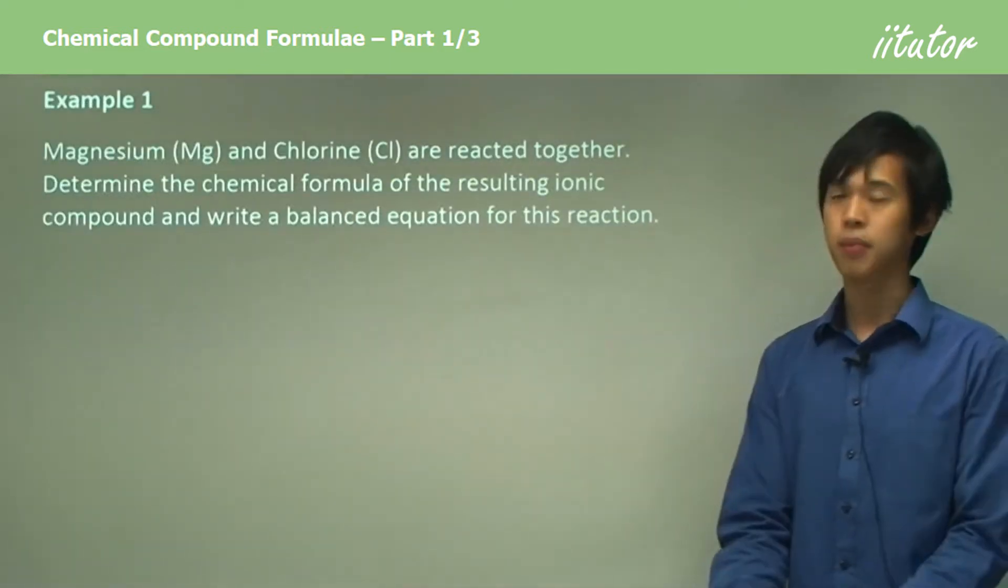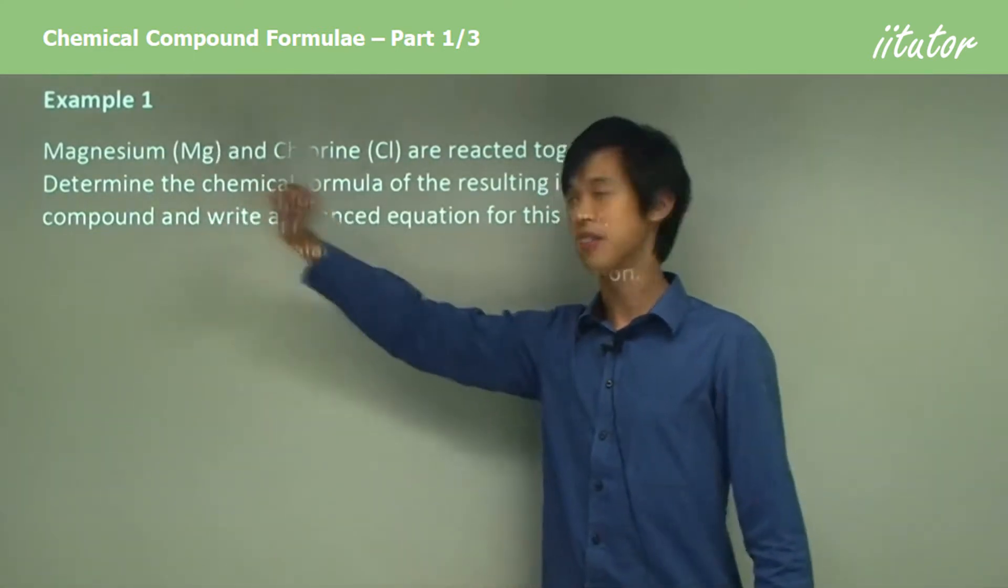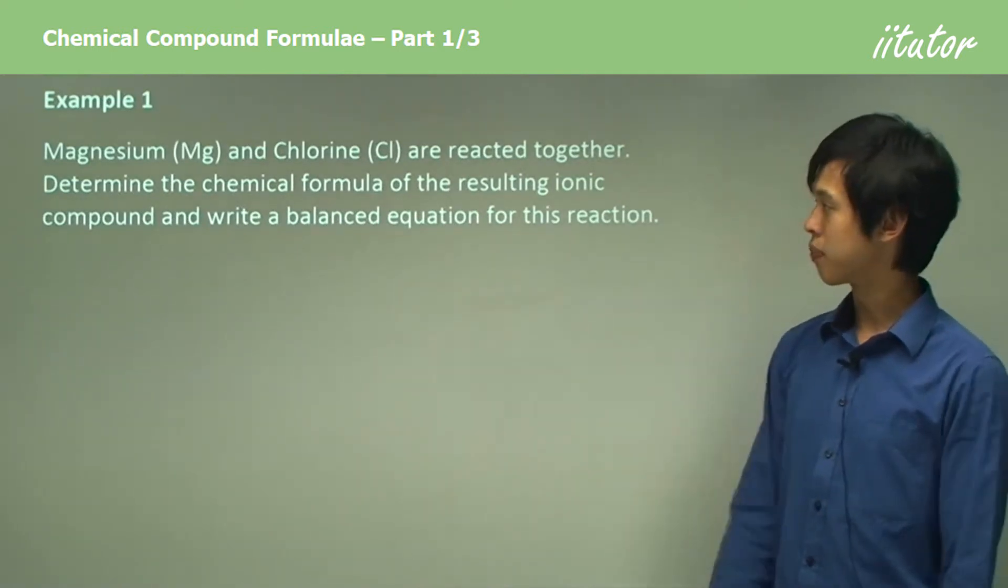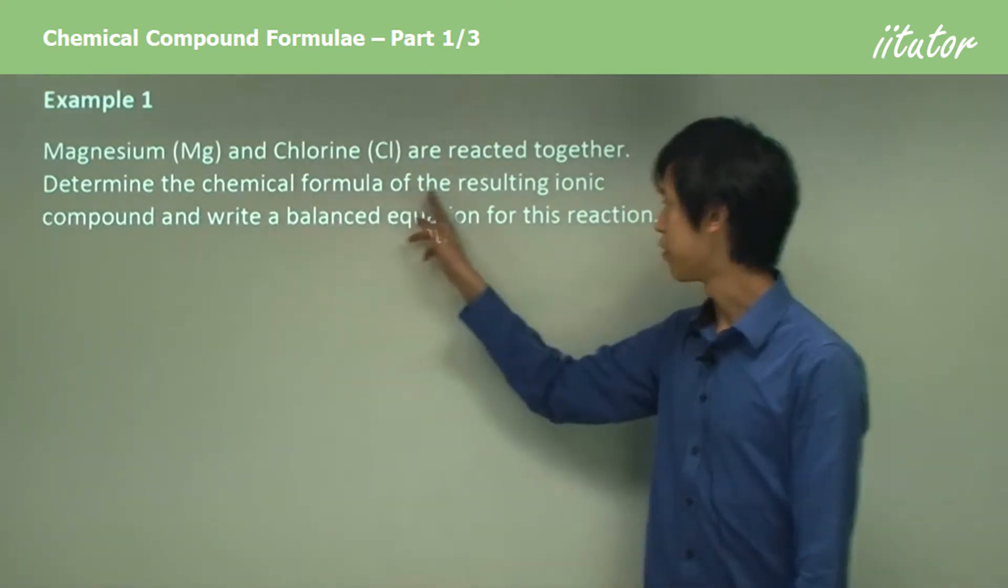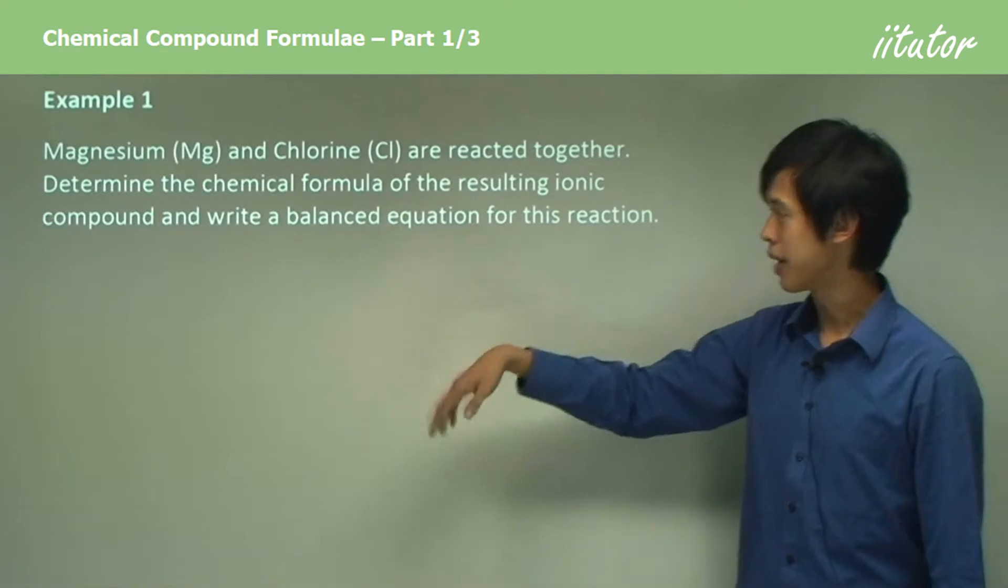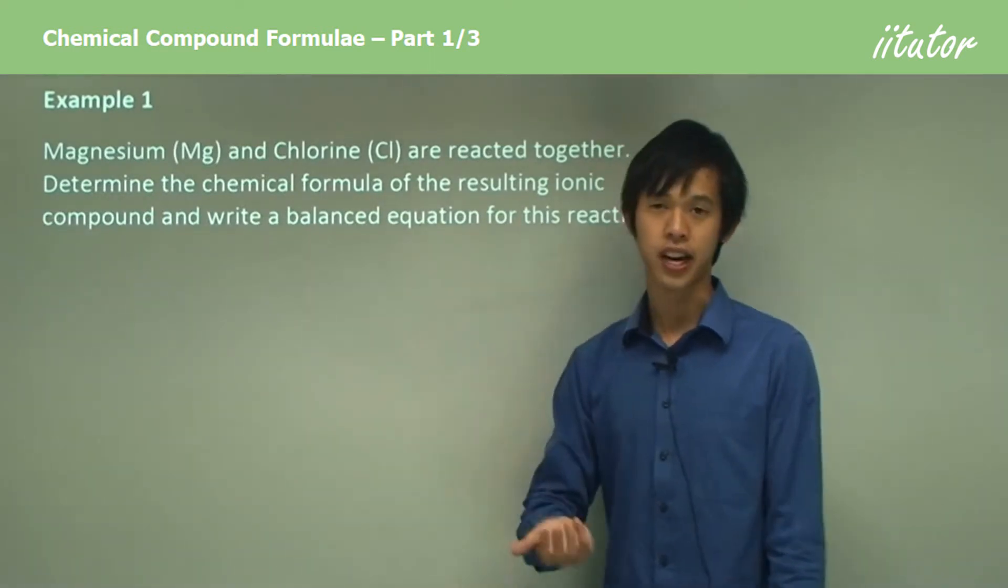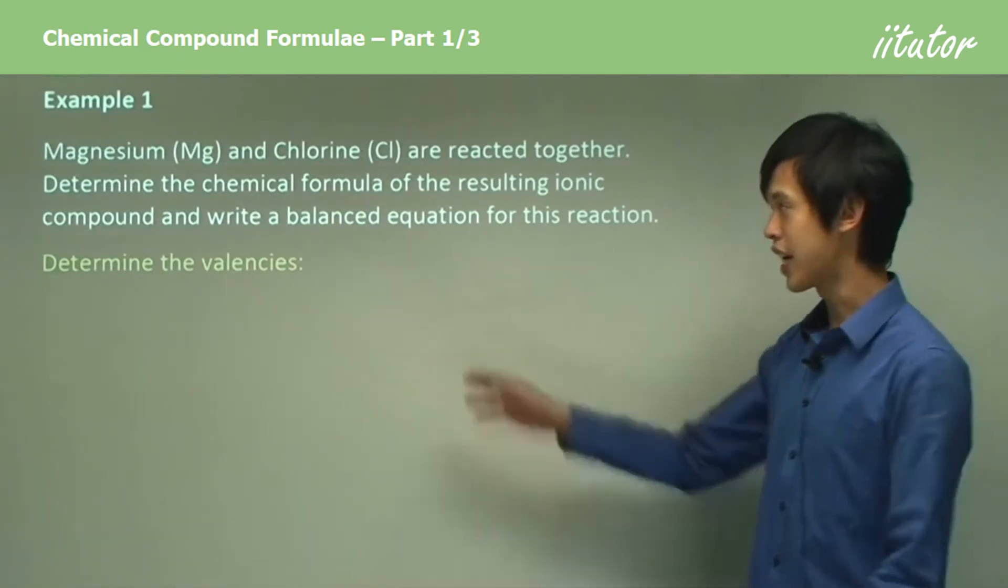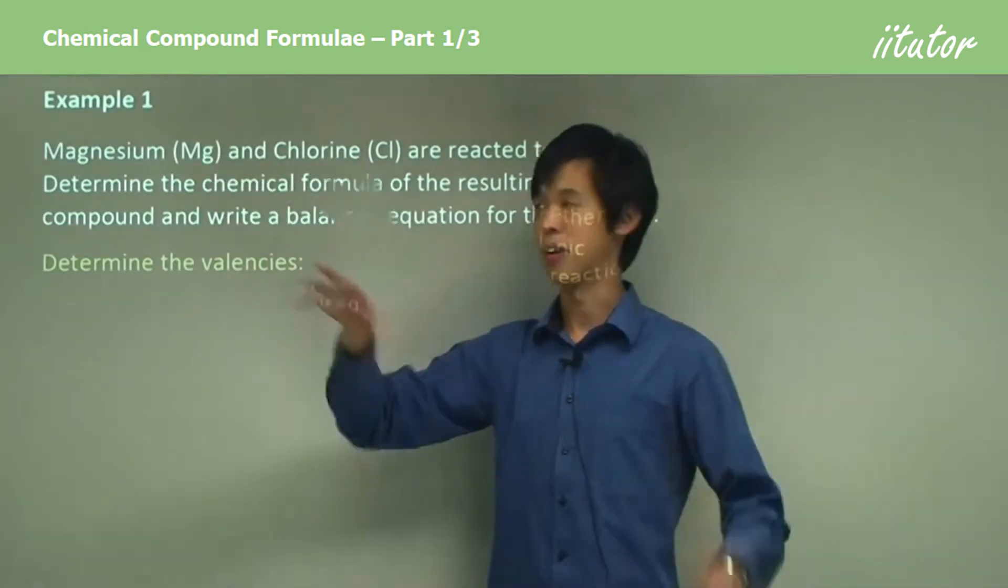Here's our example: magnesium, which is Mg, hopefully you know this, and chlorine are reacted together. Determine the chemical formula of the resulting ionic compound and write a balanced equation for this reaction. Fairly standard question. We've already identified, so we don't really have to worry about that now because we know it's magnesium and chlorine.